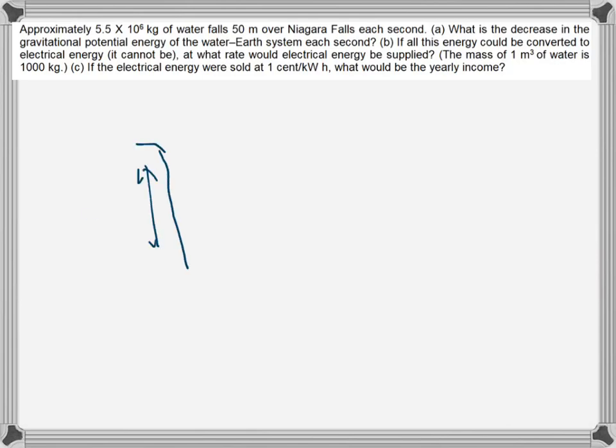So the potential energy of the Earth-water system is decreasing. The water's potential energy is decreasing by mgh, where m is the mass of the water, h is 50 meters, and g is the gravitational acceleration.